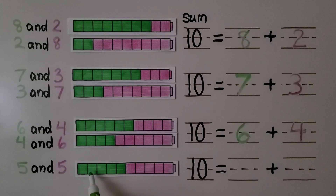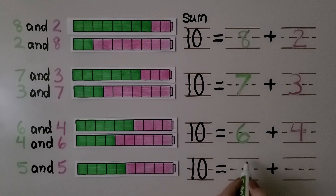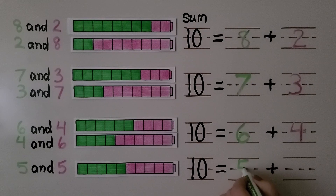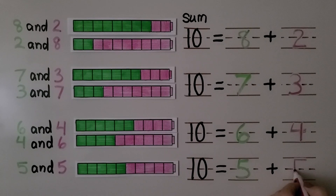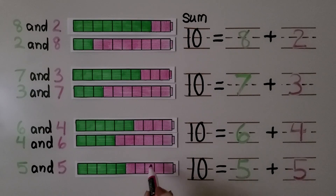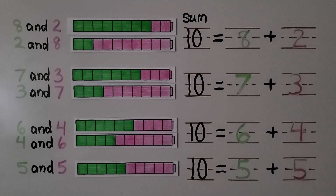Here we have one, two, three, four, five green cubes and one, two, three, four, five pink cubes. Ten is equal to five plus five. We can put the pink ones first and the green ones second — it will still equal ten when added together.